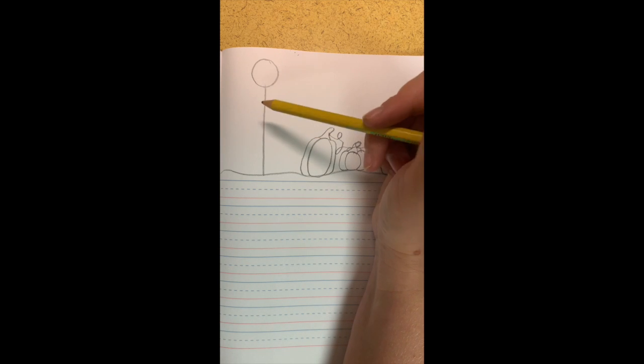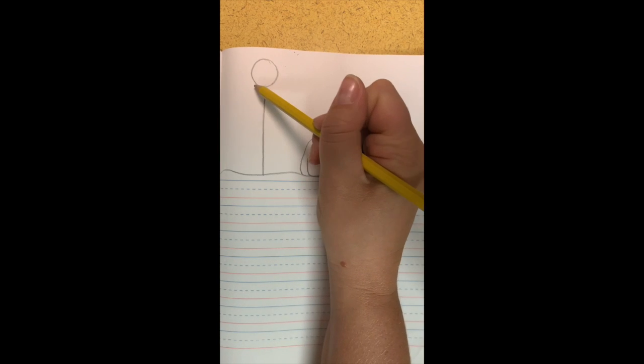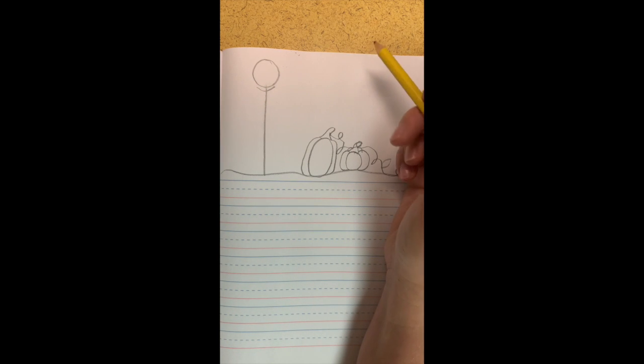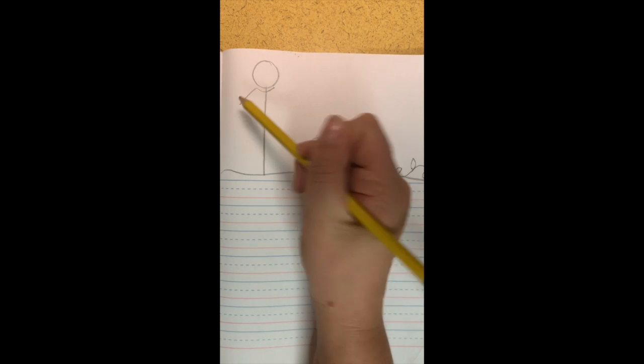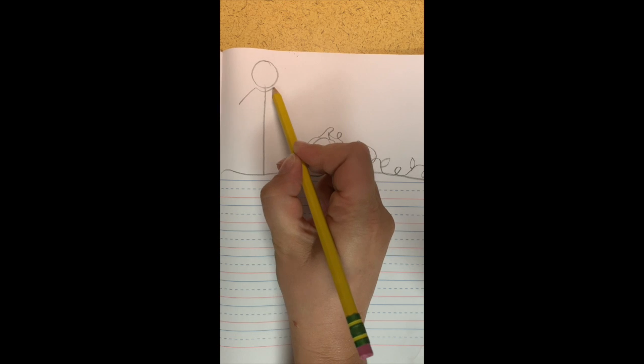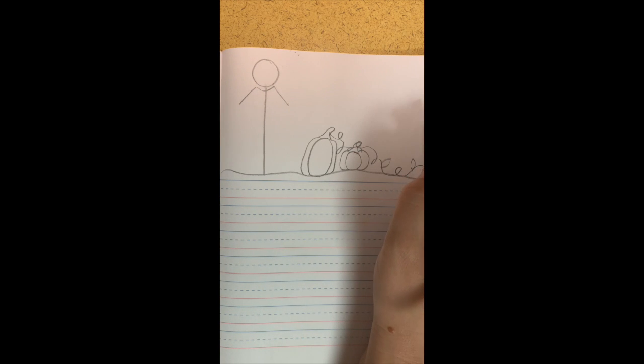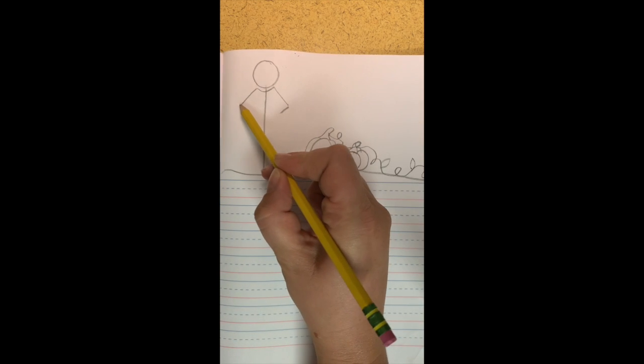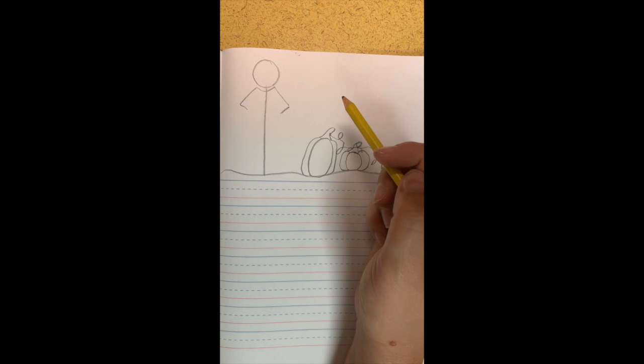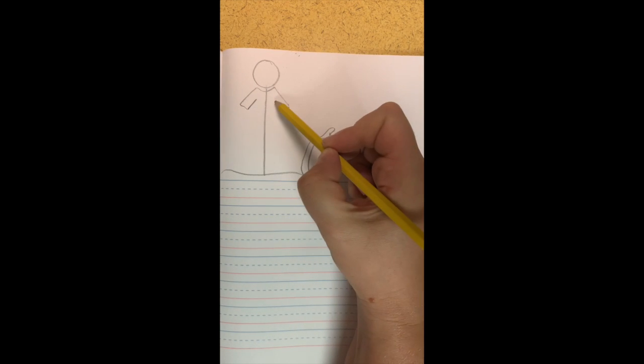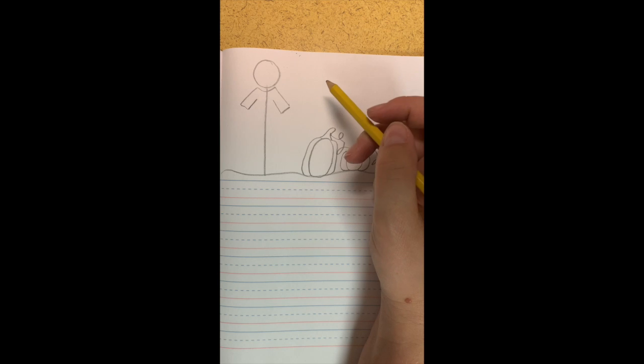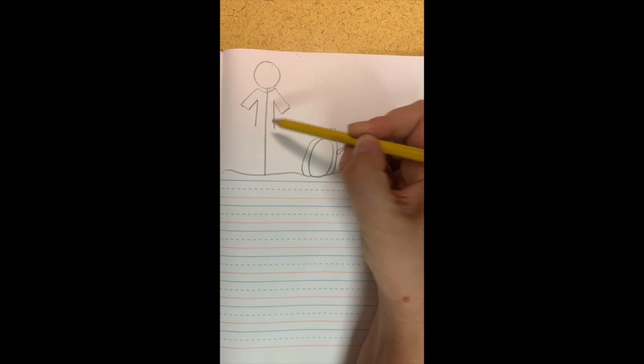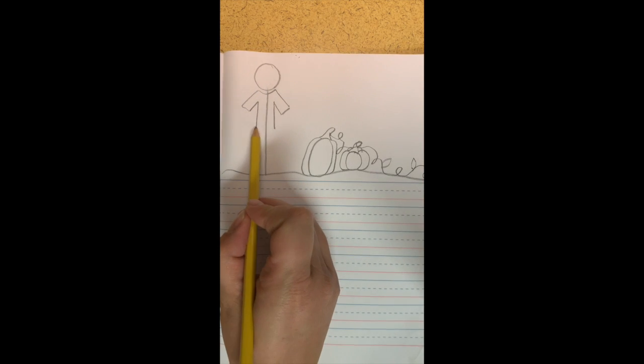Now we need to draw a shirt. So right underneath your head I want you to draw a little U. Now you're going to have a line coming up this way and a line coming up this way. Then we're going to come in and in. Up, up, up. From here we're going to go down, down, down. And then we cross it right here in the middle.